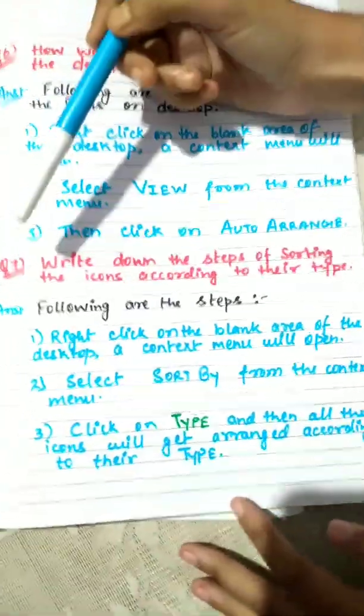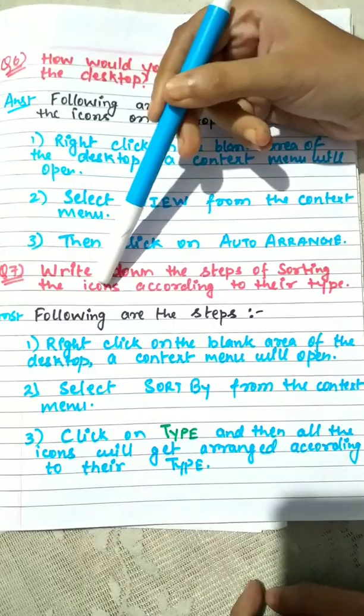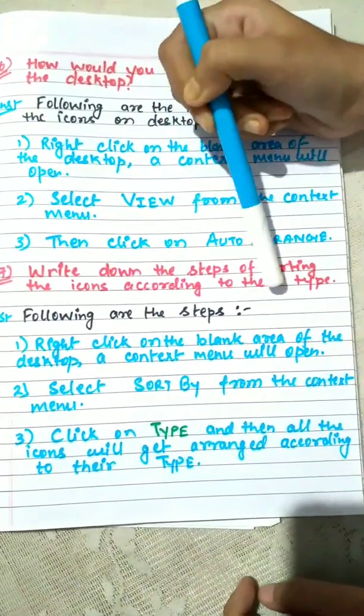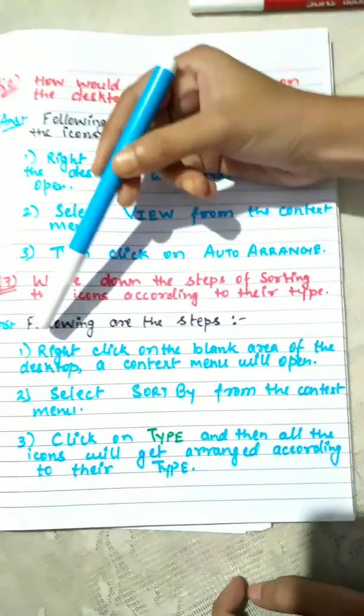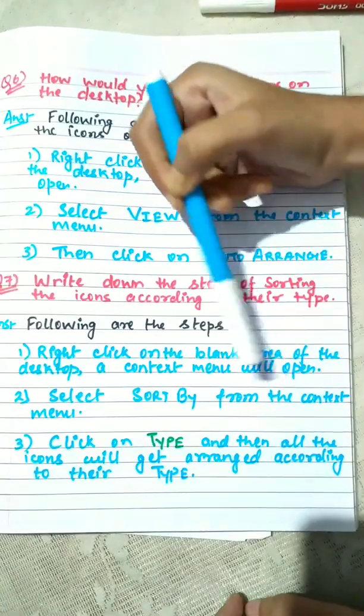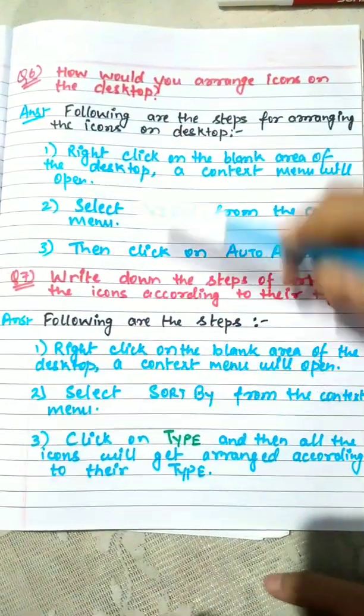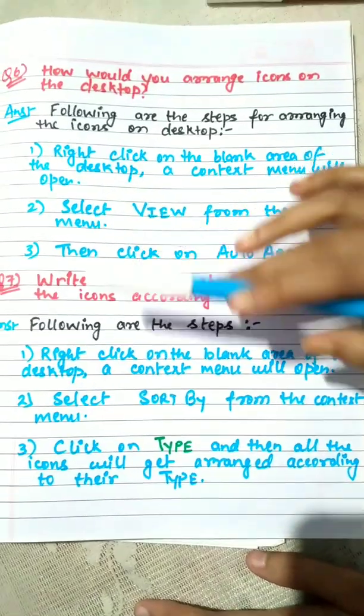Next question number 7: Write down the steps of sorting the icons according to their type. Following are the steps. Right click on the blank area of the desktop, a context menu will open. This step is very common, you have to write this step in every question.